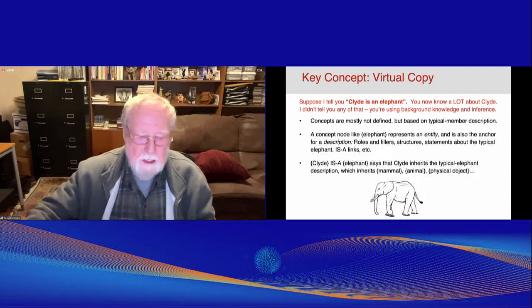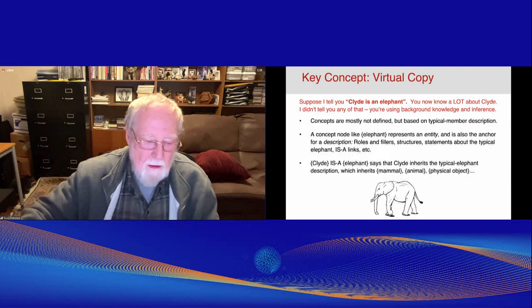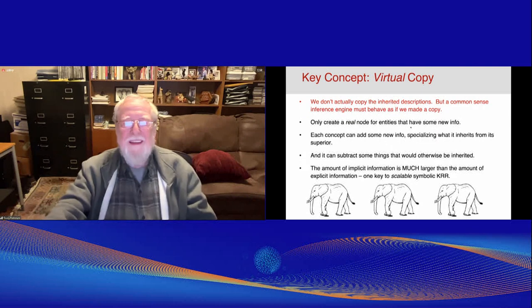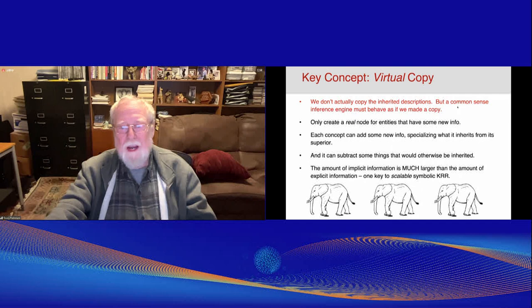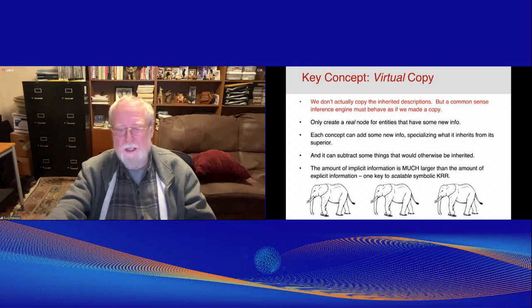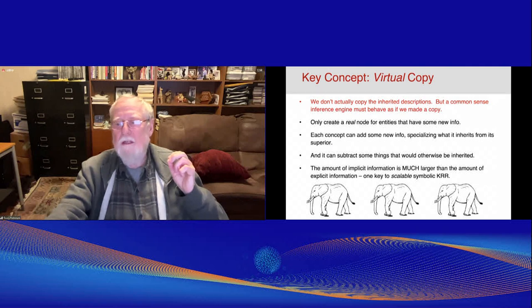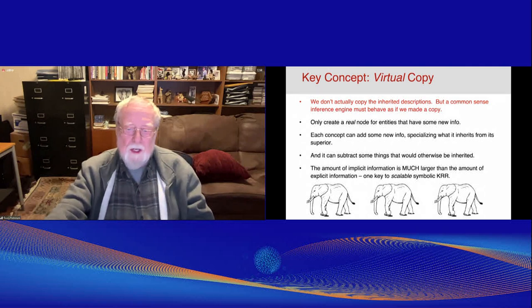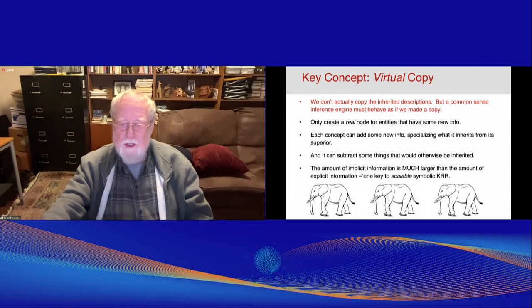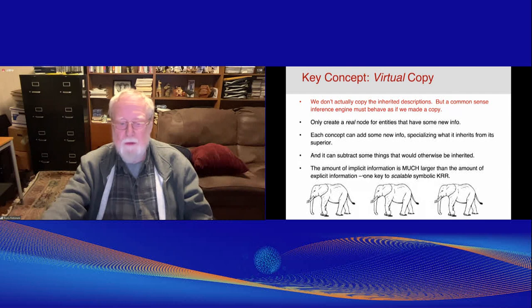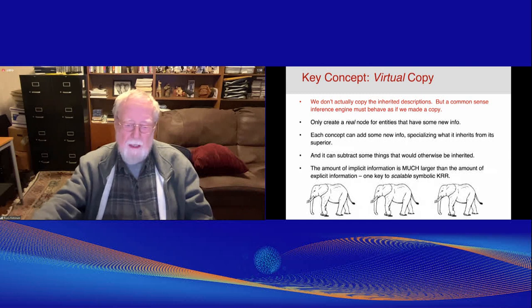And the problem is, this is the brain inspired bit. We've got millisecond neurons. How are we going to make that fast enough? We don't want to make all this knowledge explicit. We want to leave it implicit and deduce it when a query comes in, when we need it. So the amount of implicit information is much larger than the amount of explicit information. And this is a key to scalable knowledge representation and reasoning. But it requires very fast inference at query time.